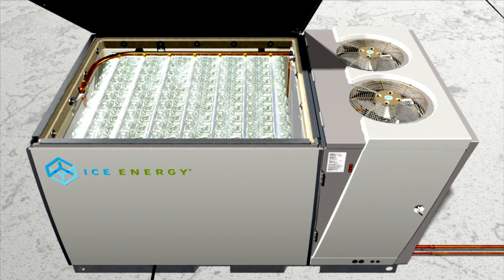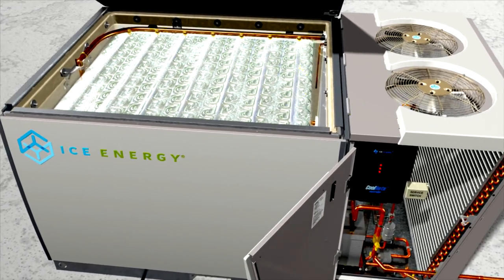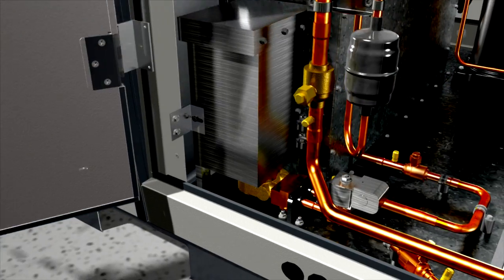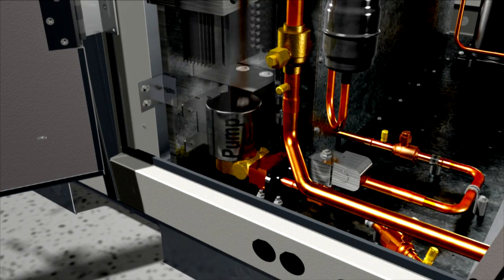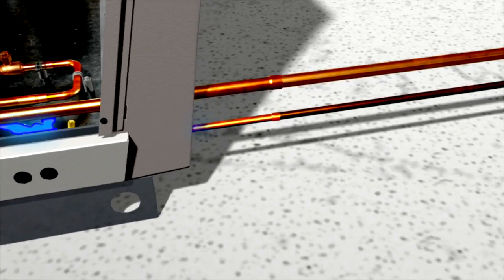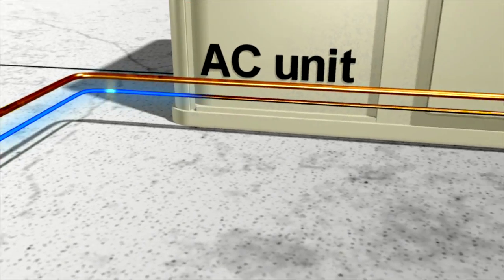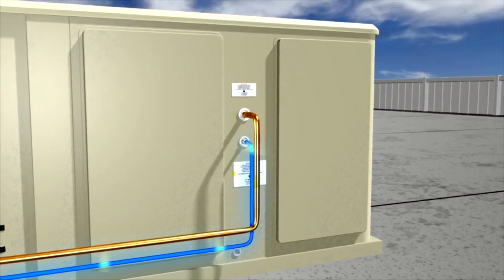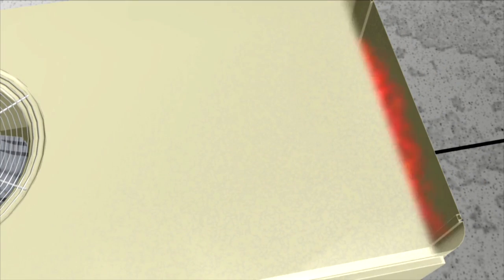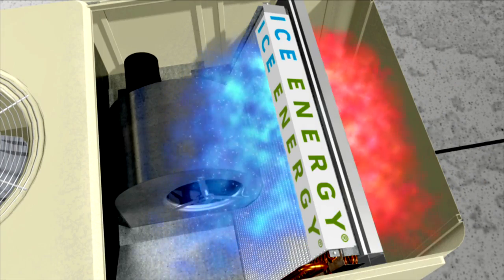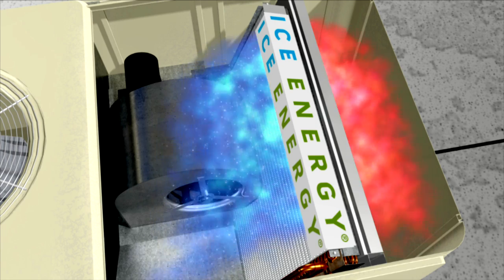The IceBear unit, fully charged from the night before, switches to cooling mode. A small, highly efficient pump pushes ice-cold refrigerant through the evaporator coil that was seamlessly added to the building's air conditioner. As warm air from the building is blown across the new coil, the ice-cold refrigerant absorbs its heat.